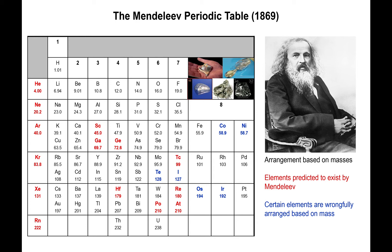The only problem with Mendeleev's table is that some elements, specifically the transition metals, weren't exactly arranged in the proper order. But the fact that he was able to predict unknown elements with such accuracy is what ultimately landed Mendeleev the title of father of the periodic table — because he not only arranged the elements, but used the table to make chemical predictions. Going beyond just collecting the data is what counts in science, and so Mendeleev gets proper recognition for it.